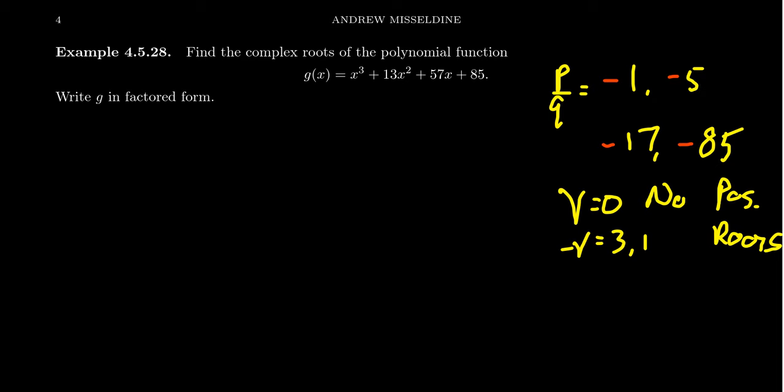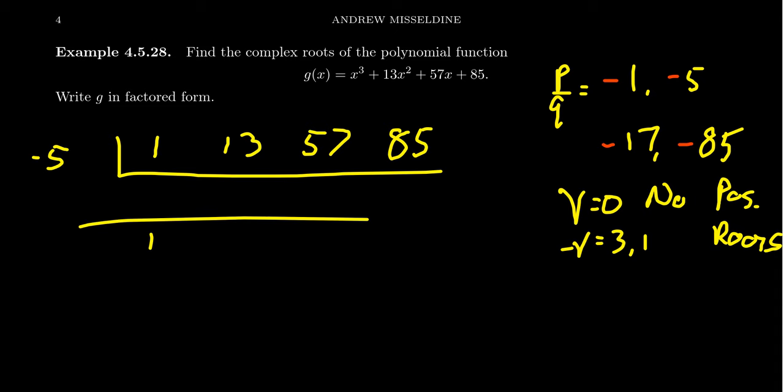So the Goldilocks of my potential rational roots right now. If we go to synthetic division: 1, 13, 57, and 85. We try negative 5. We bring down the 1. 1 times negative 5 is negative 5, plus 13 is going to be 8, times negative 5 is negative 40, plus 57 gives me 17. This is helpful here. Negative 5 times 17 is negative 85, which gives us the root. So my Goldilocks guess was actually a pretty good guess right there.